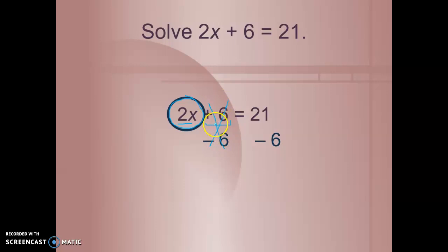But because this is an equation, we need to keep it balanced. Whatever we do to one side, we have to do to the other. So on the other side, we also have to subtract 6 to keep it balanced. That leaves us with 2x equals 15.